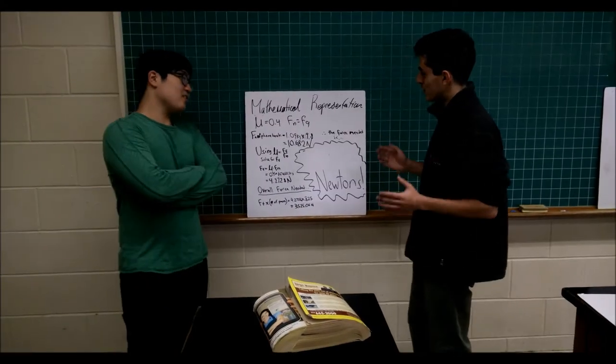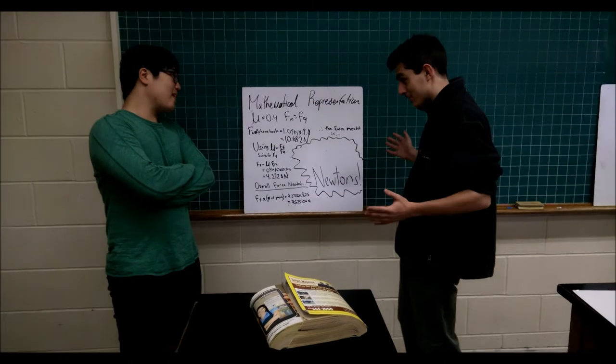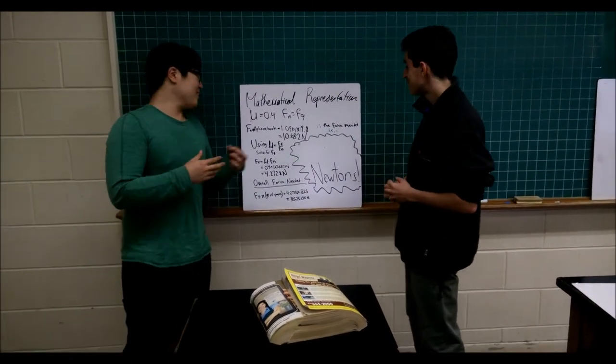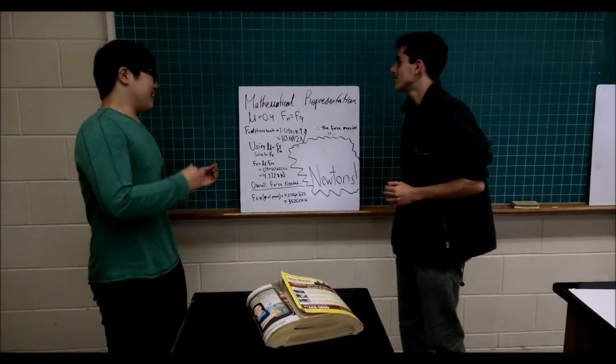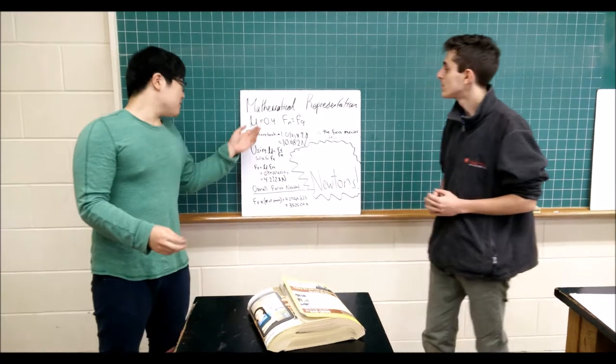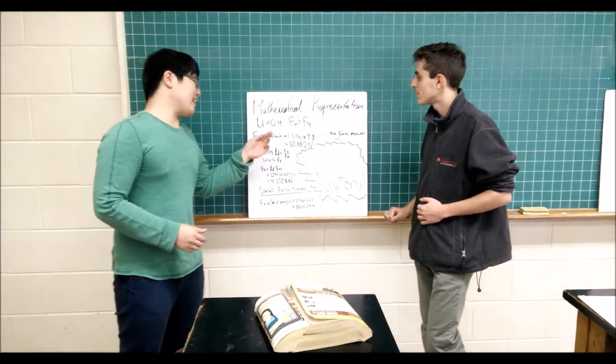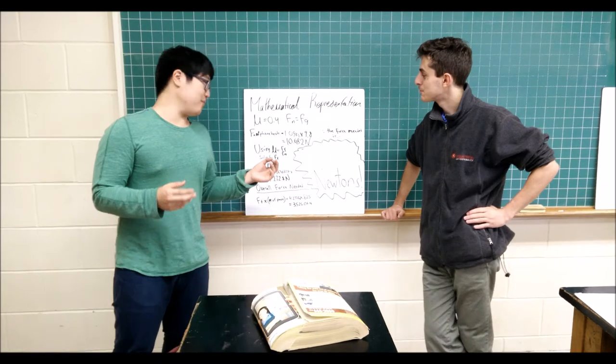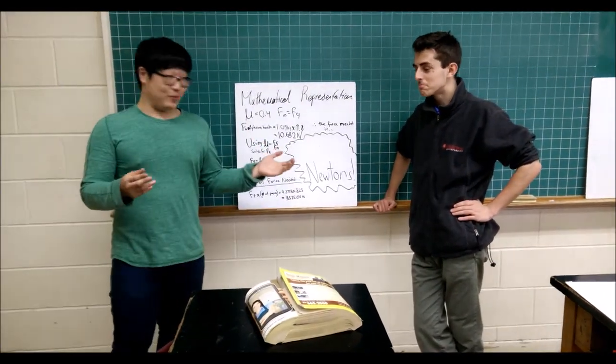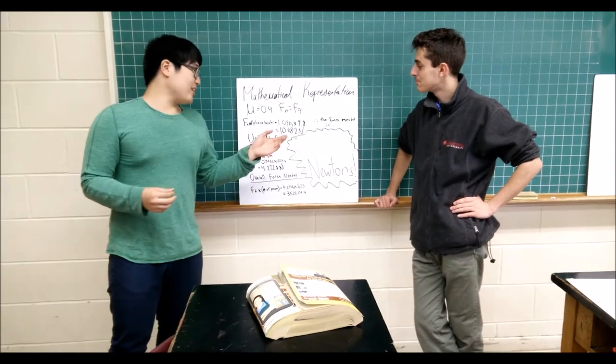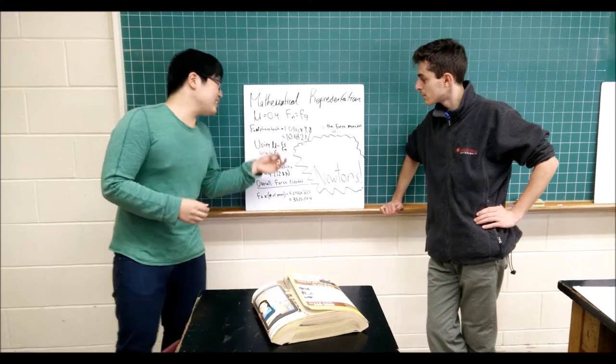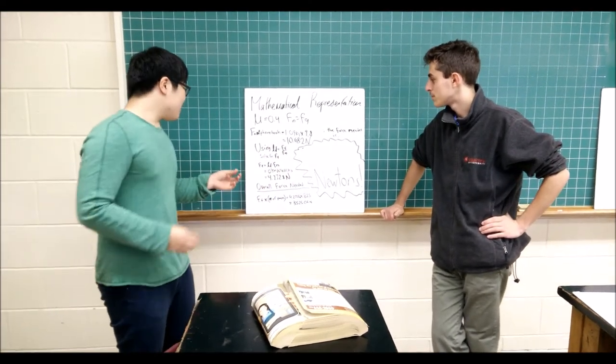So now that we got all the words and the graphs, how do we put it all together? I'm glad you asked, Roland. We can now do this with mathematical representation. We have the coefficient of friction between each page, which is 0.4, and we know that the normal force is the same as the force of gravity. So, we can find the normal force of the phone book with 1.09 kilograms times 9.8 Newtons, which equals 10.682 Newtons.